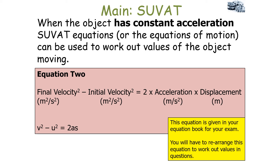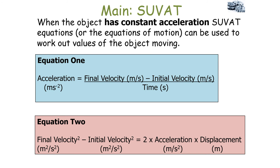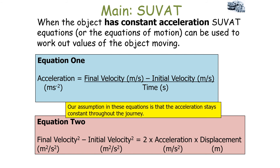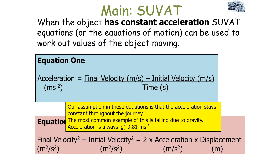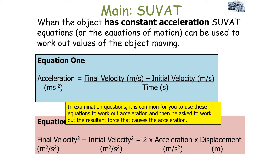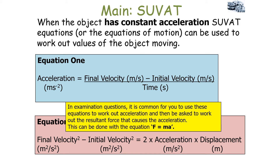When an object has constant acceleration, the equations of motion can be used to work out values of the object moving. The most common example of constant acceleration is an object falling due to gravity, where acceleration equals g = 9.81 m/s². In examination questions it's common to use these equations to work out acceleration and then be asked to work out the resultant force using Newton's second law of motion: F = ma.